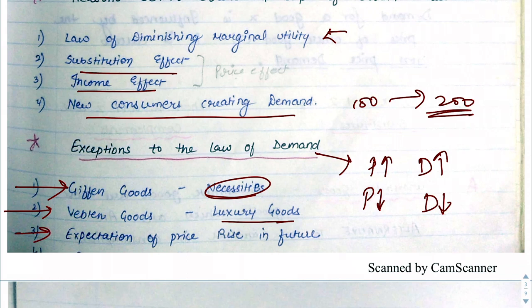Next exception is expectation of future price rise. If we feel that the price of an AC will increase from 40,000 to 50,000 in a few days, we will buy it now at 40,000 even though the normal price is around 30,000. We know the price will rise, so we are ready to pay the higher price now — demand increases despite the higher current price.